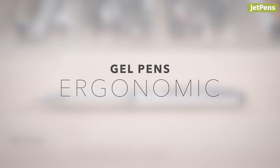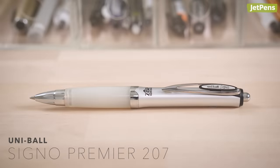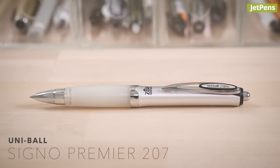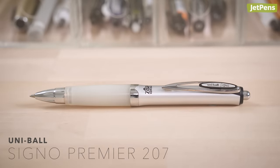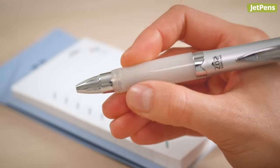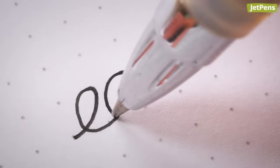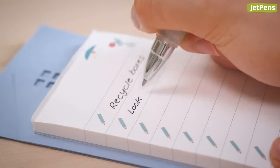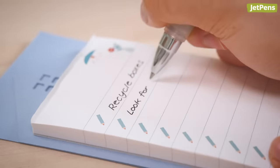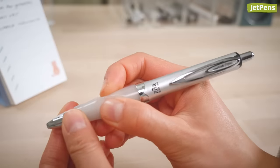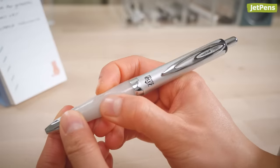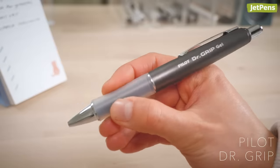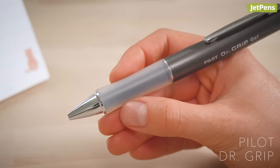Ergonomic. The UniBall Signo Premier 207 upgrades the standard Signo pen with an ultra-soft grip, alleviating stress if you squeeze your pens tightly. Plus, Signo ink flows with just a light touch, also preventing you from pressing down too hard on the tip. The Premier 207 might be a little too squishy for some hands. Try the Pilot Doctor Grip instead, which uses a firmer rubber for its grip section.